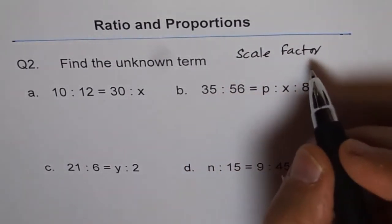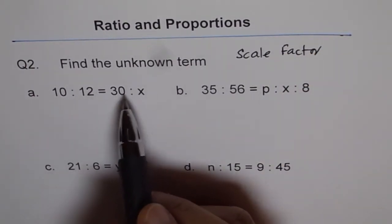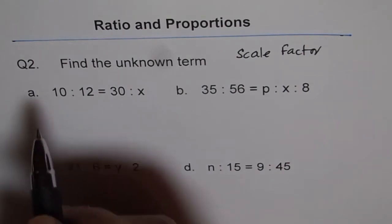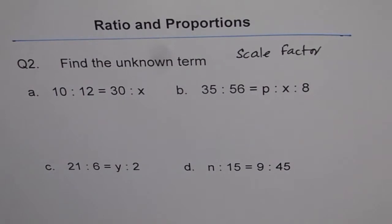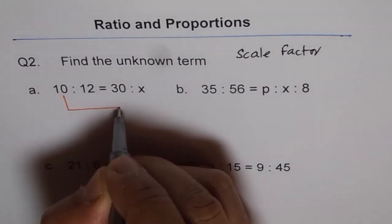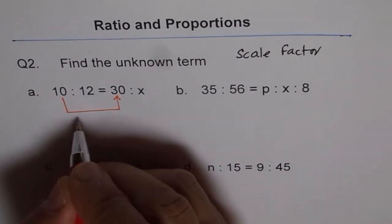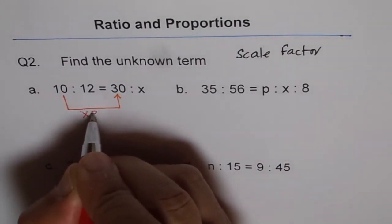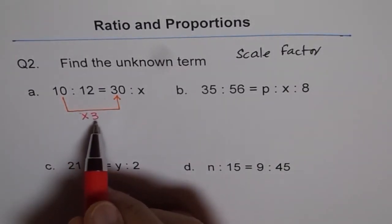Scale factor is the number by which we multiply left side to get the right side. Now here, 10 to 30. So how do we get from 10 to 30? This is first question. So we can get from 10 to 30 if we times it by 3. So that is the ratio. 3 is your scale factor.